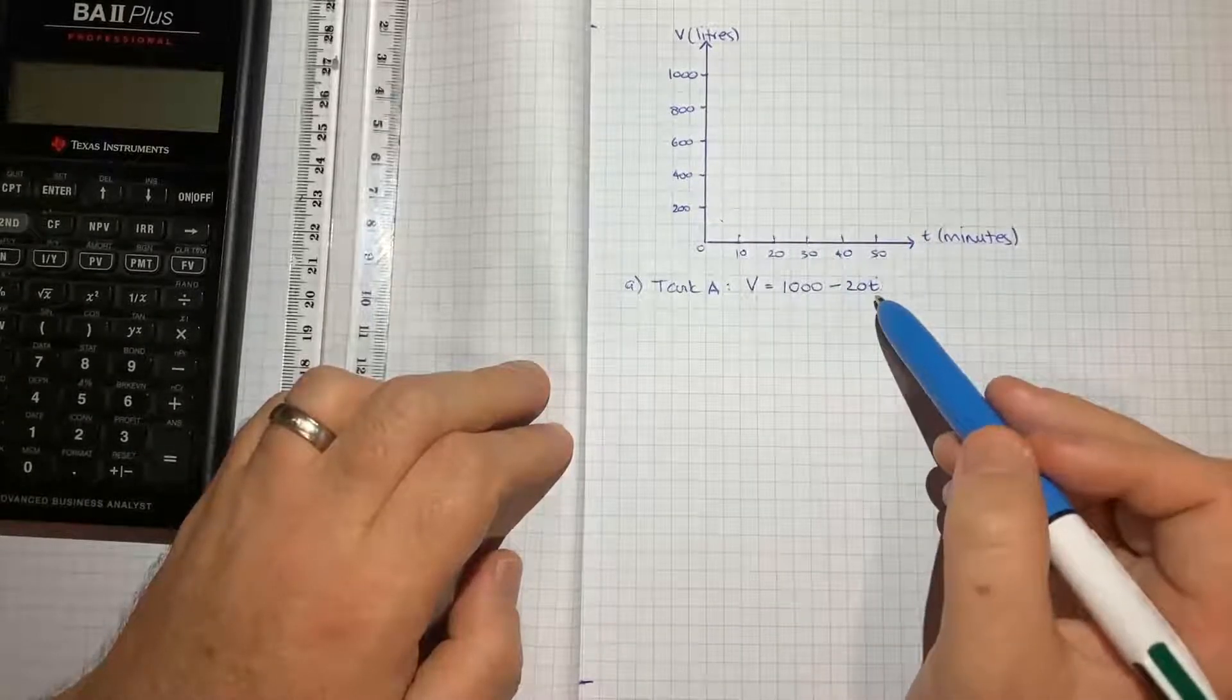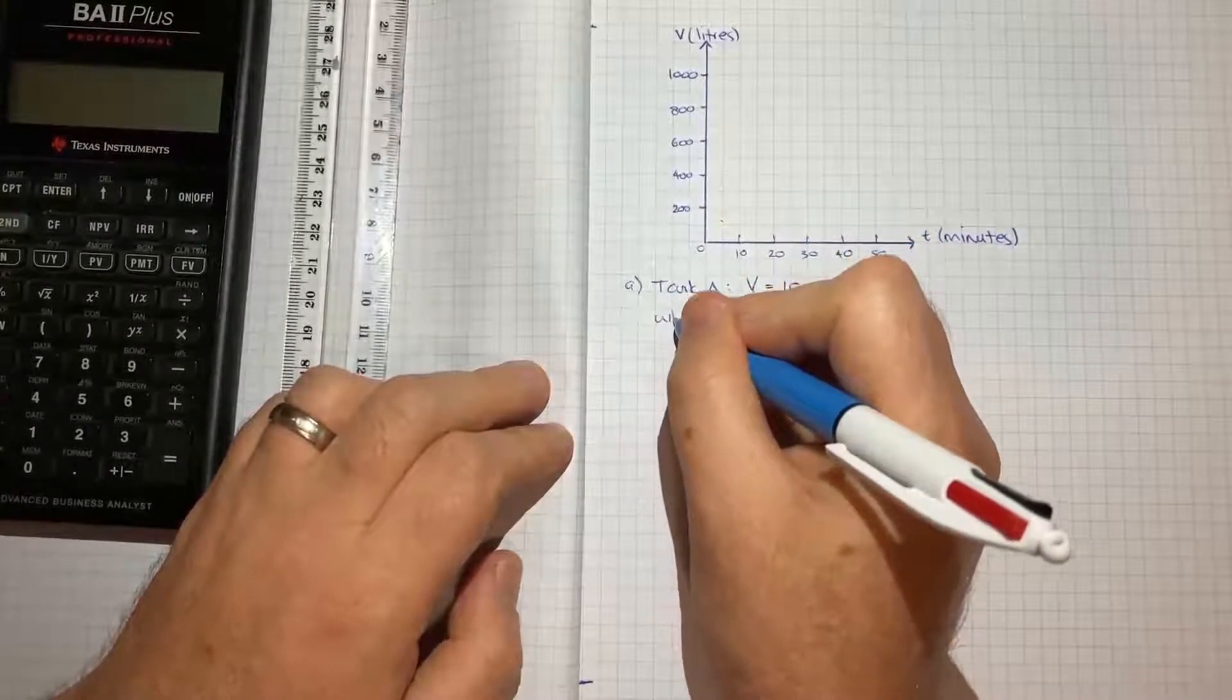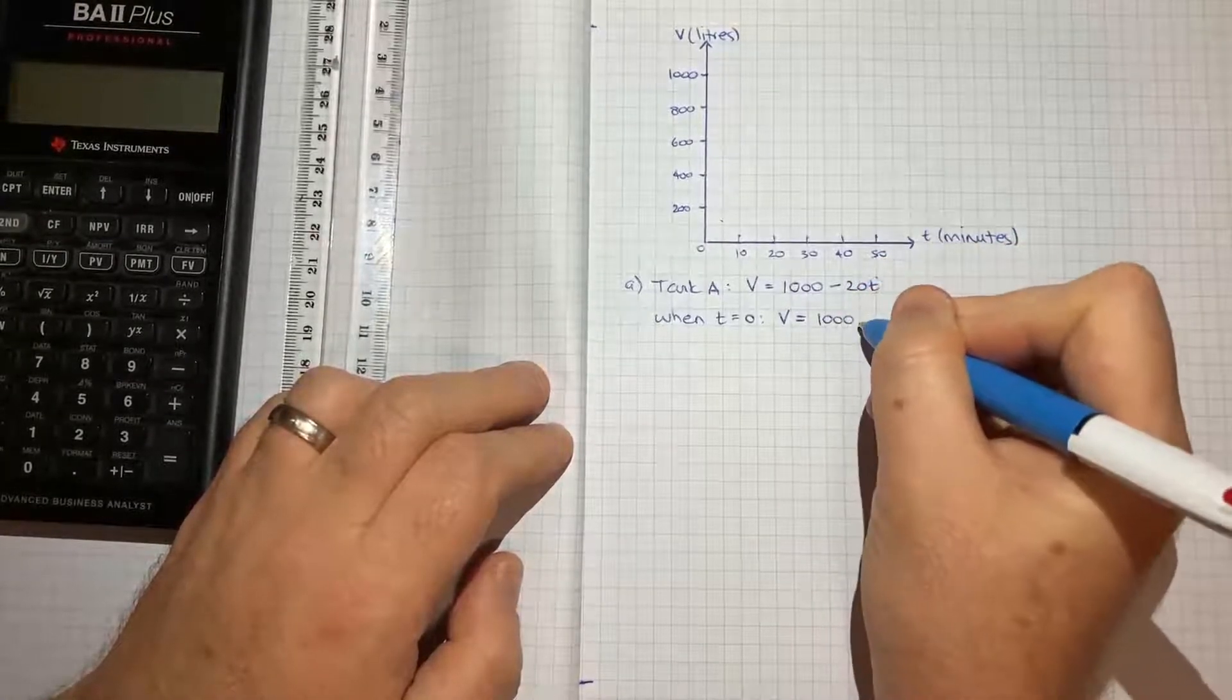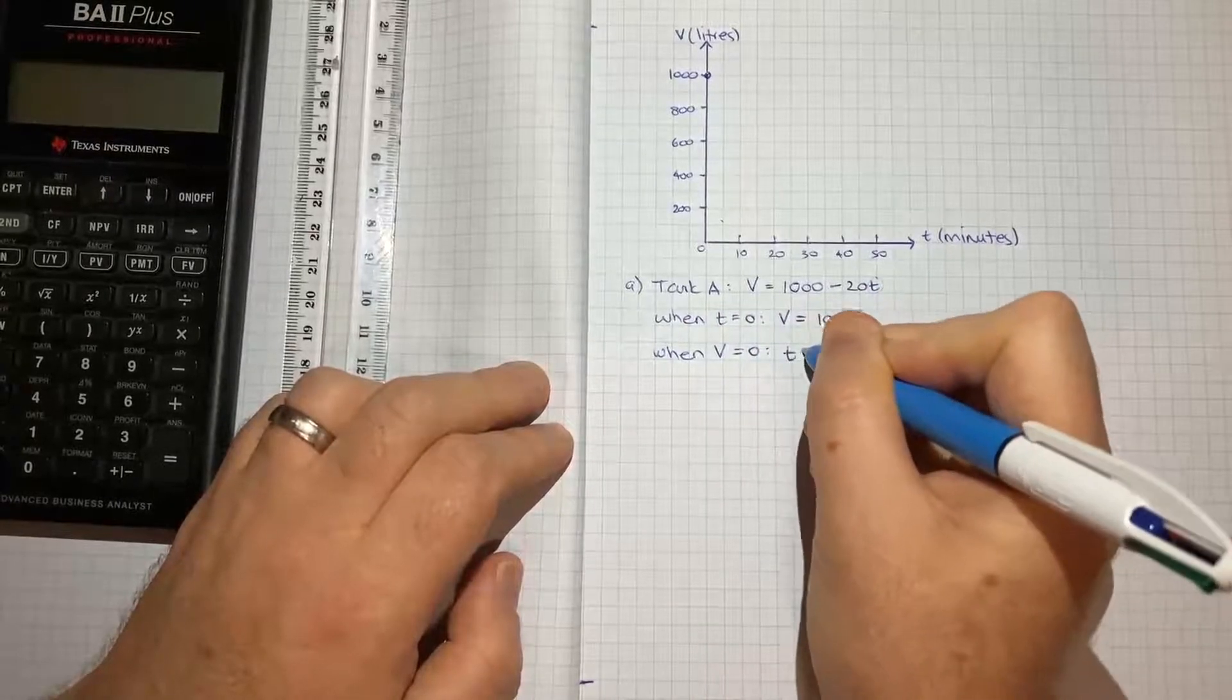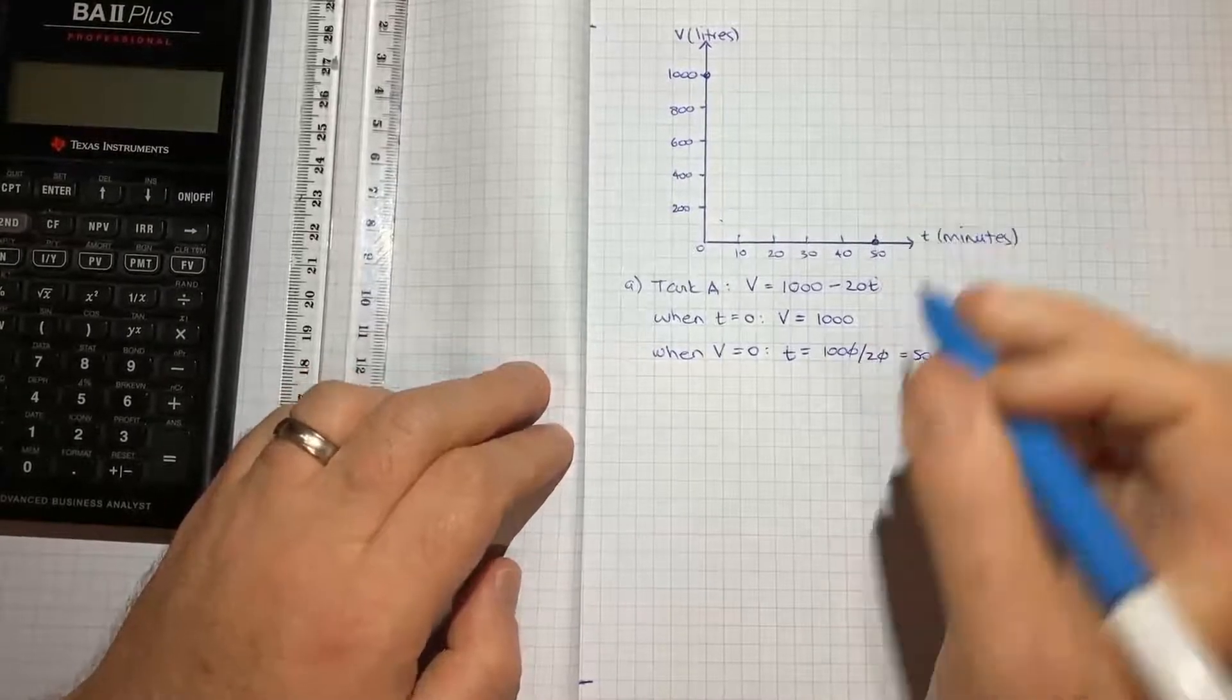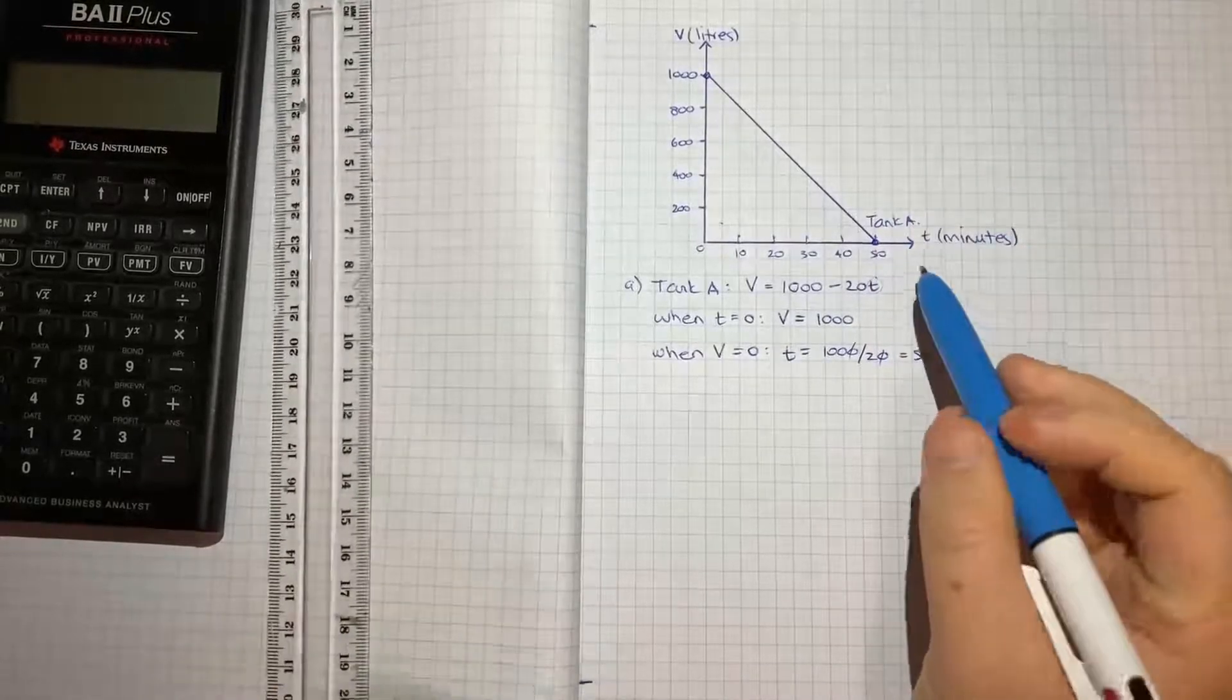The two most obvious points would be the intercepts—when T = 0 and when V = 0. When T = 0, the volume would equal 1000 - 20(0) = 1000. That's easy enough to plot. When V = 0, T would equal 1000 ÷ 20 = 50. So that's this point here. If I connect these two points and label it tank A, that's part A of the question done.